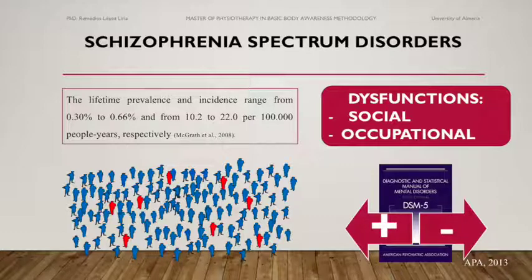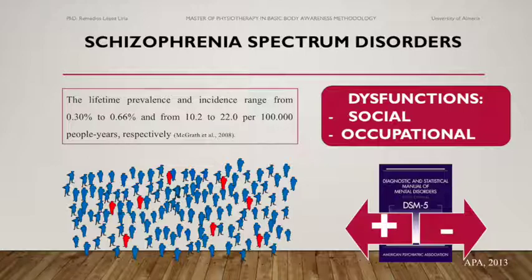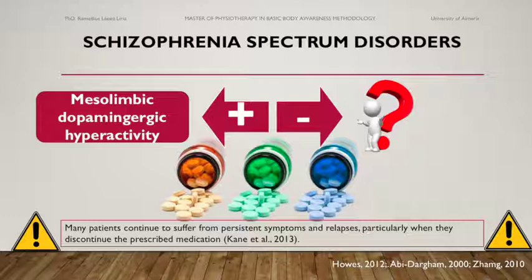Positive symptoms reflect an excess or distortion of normal functions and manifest in symptoms such as delusions, hallucinations, and disorganized speech and behavior. Negative symptoms reflect a reduction or loss of normal functions, consisting of symptoms such as affective flattening, apathy, avolition, and social withdrawal. Mesolimbic dopaminergic hyperactivity is believed to underlie positive symptoms, while the pathology of negative symptoms is poorly understood.